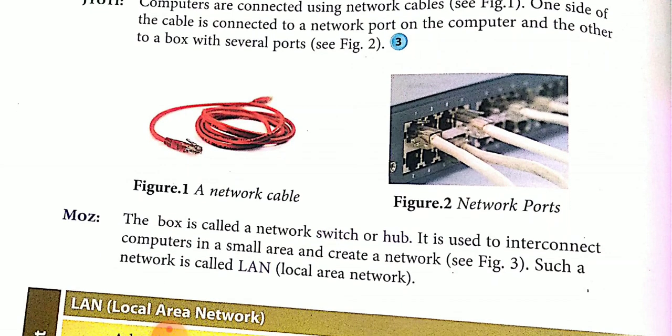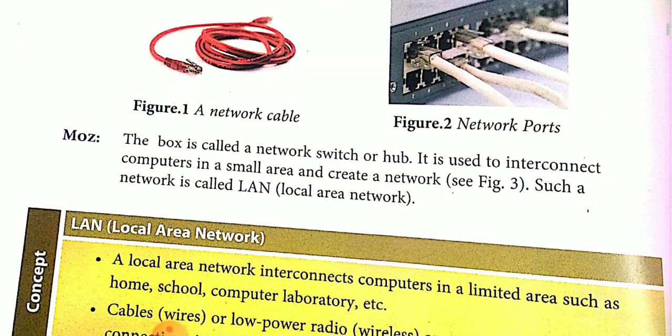Look at the first picture — this is a network cable, and the second picture shows a network port. In your lab, you can see these cables and network ports. Inside your CPU box, these ports are available, and the network cables are attached into these network ports. The box is called a network switch or hub. It is used to interconnect computers in a small area and create a network. Such a network is called a LAN.